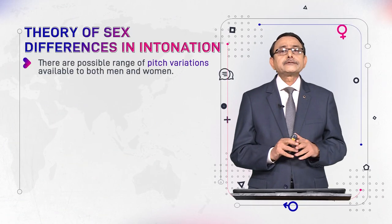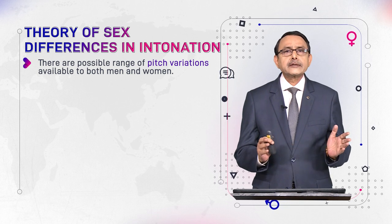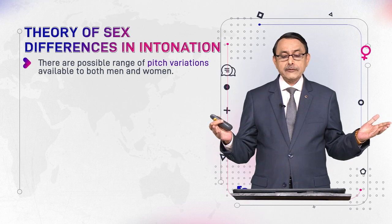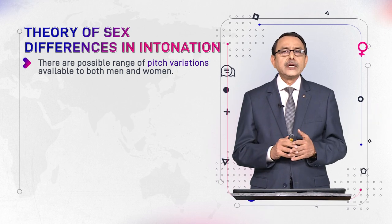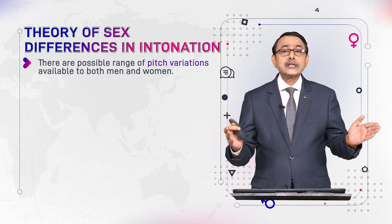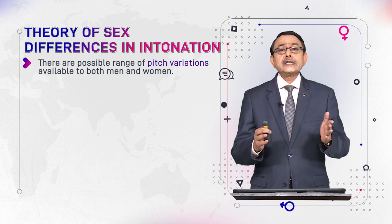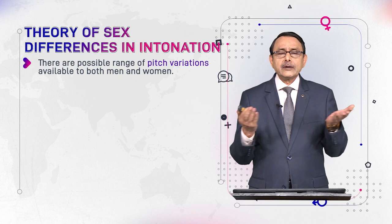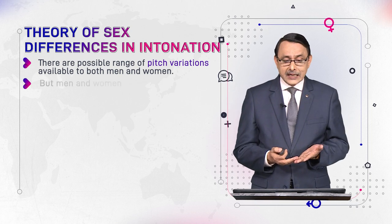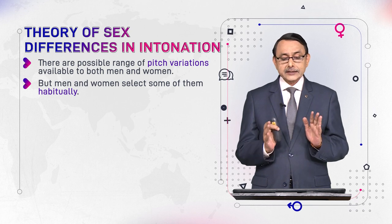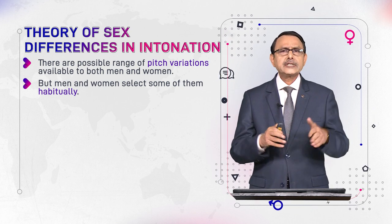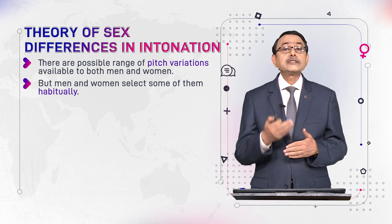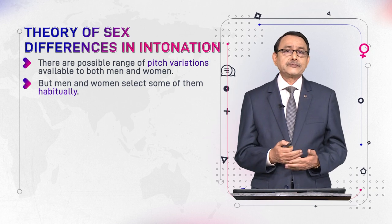The fifth point of the theory of intonation and sex is: there are possible ranges of pitch variations available to both men and women. They share the same language system, so they share the same range of linguistic resources available to both sexes. But men and women select some of them habitually — it is their preference, which may be because of cultural factors or personal purposes.